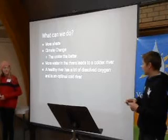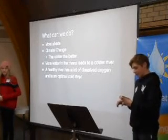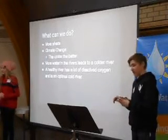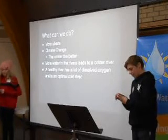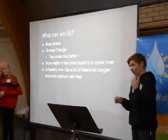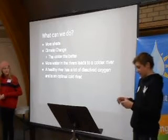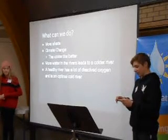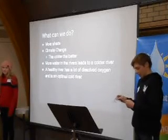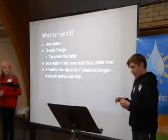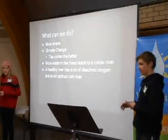Less water in our rivers means the water will be hotter because the sun can hit all parts of the river. If we had more water, the heat would only hit the top. So if we sent a little less water to the east of Colorado and found other ways to keep water in our rivers, they would stay cold and optimal. The worst period for our rivers are July, August, and September.